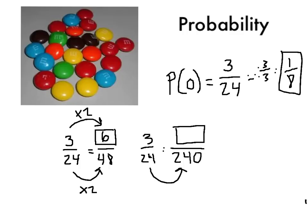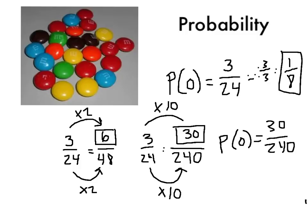Okay, so what I did is 24 goes into 240 times 10, right? 24 times 10 is 240. So I'm going to do the same thing on top. And I get 30. So the probability of getting an orange would be 30 out of 240 M&Ms. So we're kind of telling the future.